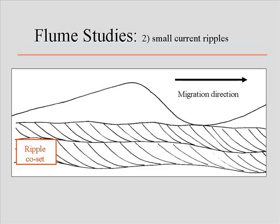Over time, with net deposition and net accretion, each successive passing of an additional ripple will remove — but not completely — the previous ones, giving rise to so-called cross-lamination. These are called ripple cross-laminae because they are ripple-scaled. They may look tiny, but they are incredibly important.